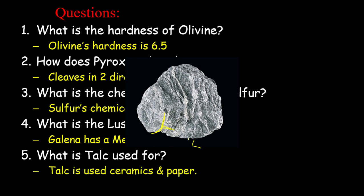Those are the physical properties of minerals — your different tests. You have luster, hardness, breakage meaning cleavage or fracture, the different colors, and then your distinguishing characteristics and uses, including streak and any other information that might help you. We're going to stop this video here. There's another section of notes, and I'll make a second video to finish that up. If you have any questions, please reach out on Teams and I'll gladly answer.